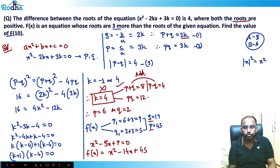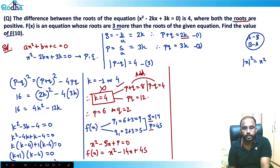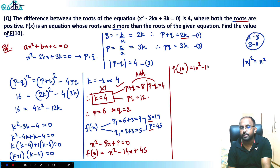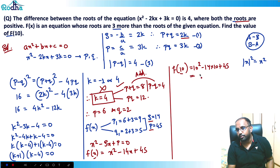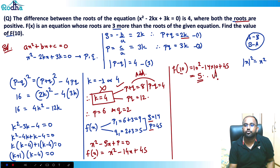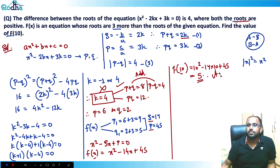They've asked for the value of f(10). So putting x = 10: f(10) = 10² - 14(10) + 45 = 100 - 140 + 45 = 5. Therefore f(10) = 5 is the answer.